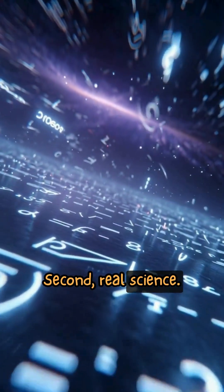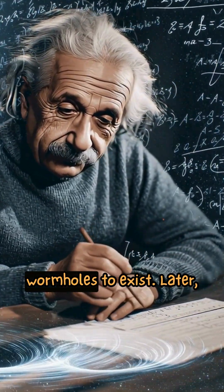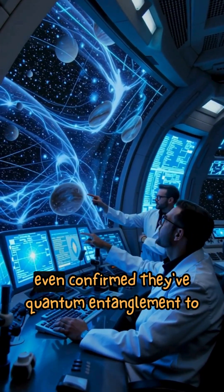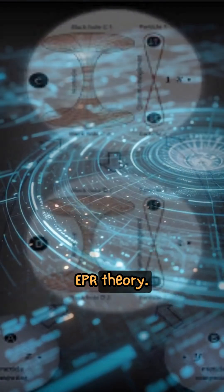Second, real science. Einstein's equations actually allow wormholes to exist. Later, scientists like Maldacena and Susskind even connected quantum entanglement to wormholes in their ER and EPR theory.